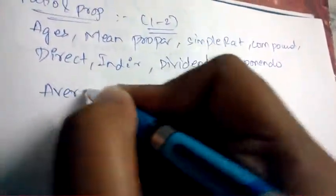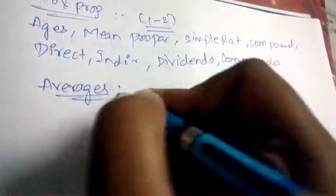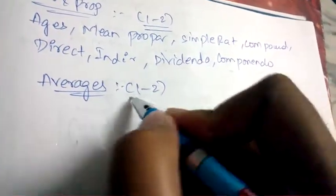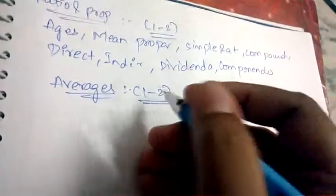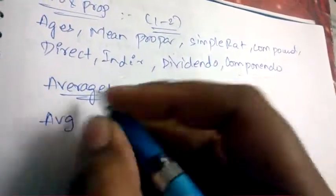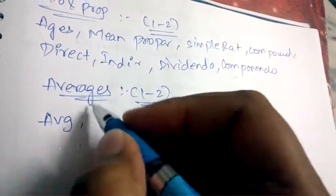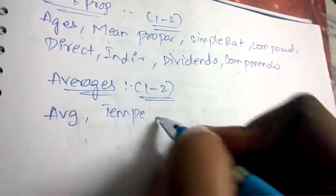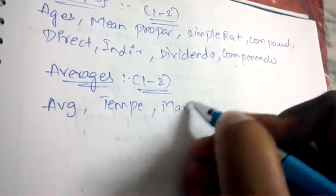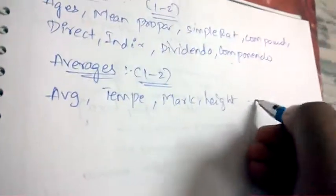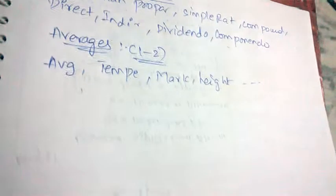The next topic is Averages — the weightage is only 1 to 2 questions. Under averages, they'll be asking about average temperature, average marks, height, weight, and all types of average calculations.